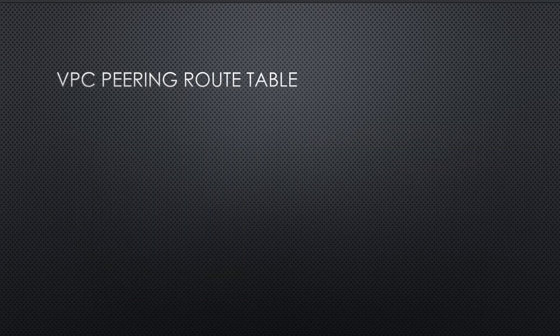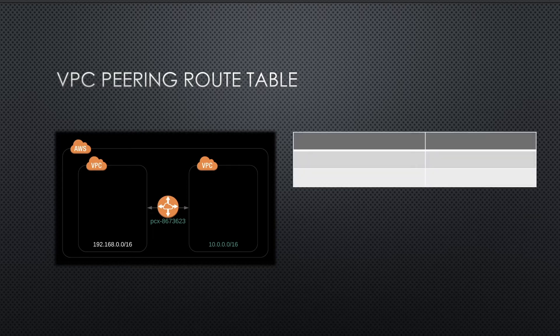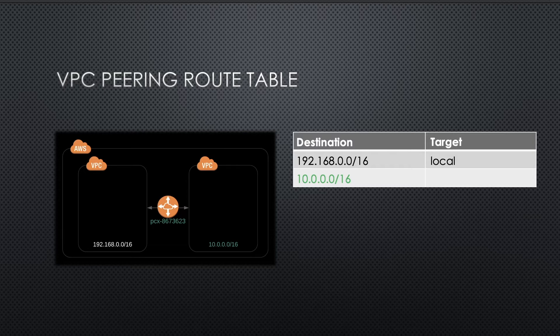In the last example, I want to show you how you would set up VPC peering. You have two VPCs and you created a peering connection between them. Now you need to configure the routing table. The first VPC route table will look like this: under the destination, you would put the CIDR of your connected VPC — in this case 10.0.0.0/16 — and under the target, you would put the peering connection ID.